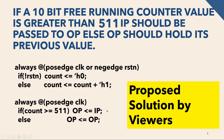A very important thing to notice: this must be a sequential block, not a combinational block. Writing output equal to output in a combinational block would form a combinational loop. That is why we use a sequential block here, and because of the one cycle of delay in the sequential block, we need to include the equal-to sign in the condition.